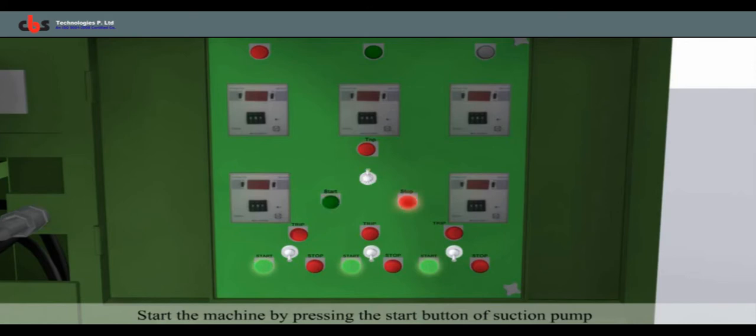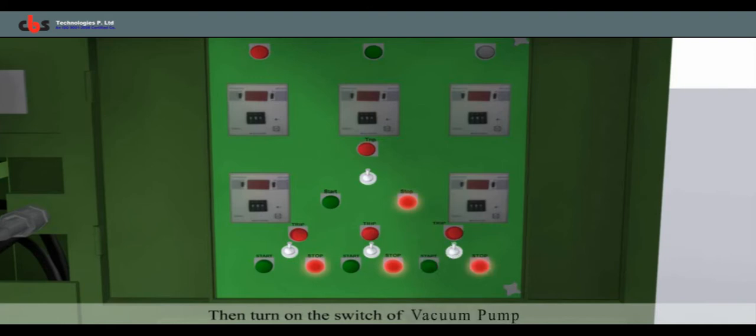Press up to start the suction motor. Then turn on the discharge motor. After that, turn on the heaters from control panel. Then turn on the switch of vacuum pump.